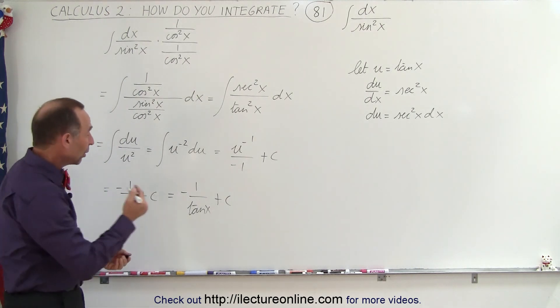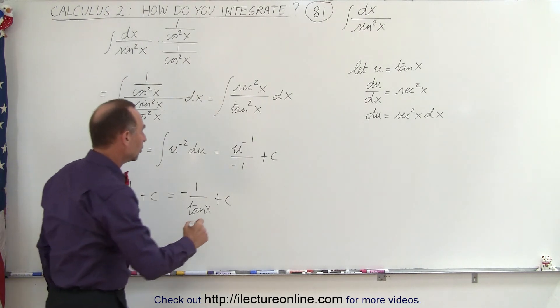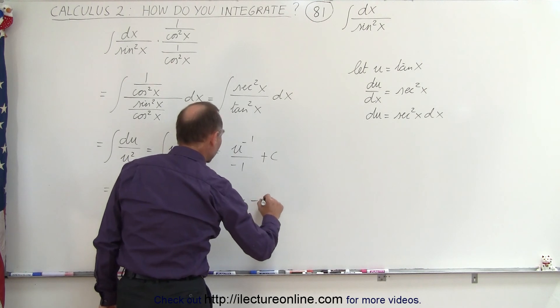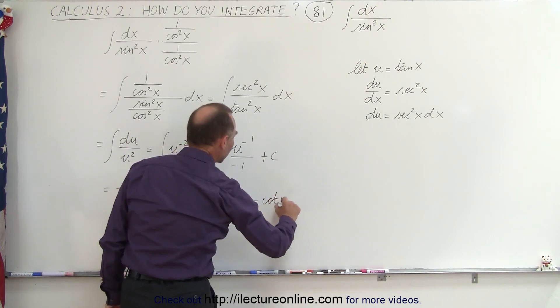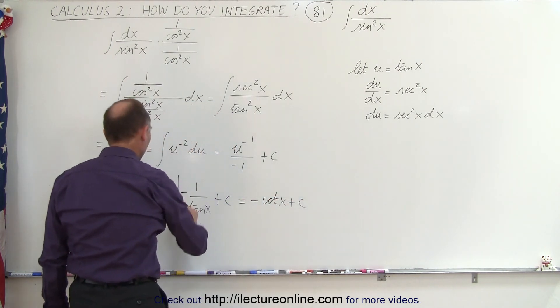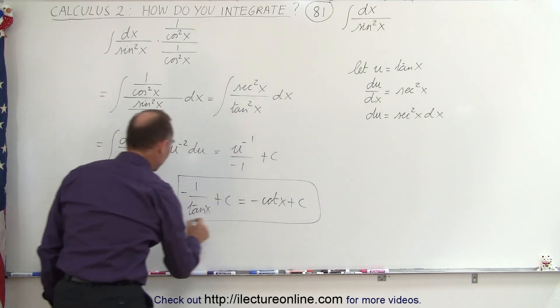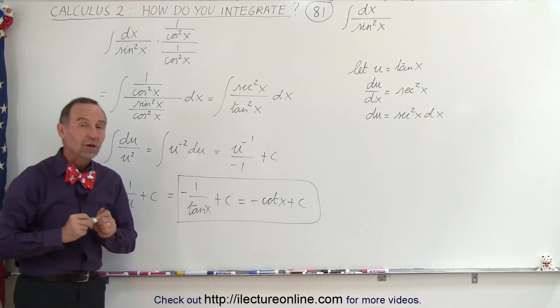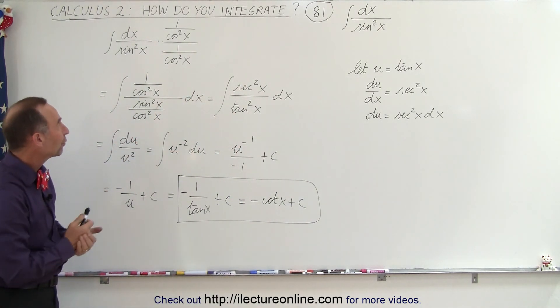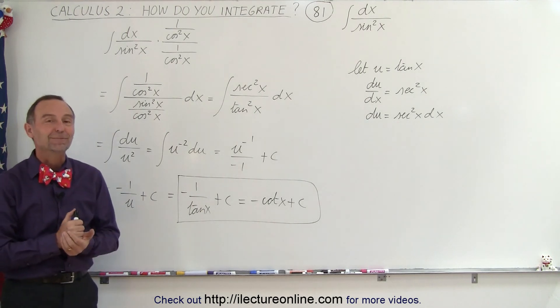And if you really insist, 1 over the tangent is the same as the cotangent, so this could also be written as minus the cotangent of x plus a constant of integration. So either one of these two is probably a good final result for the integral of 1 over the sine squared of x. And that's how it's done.